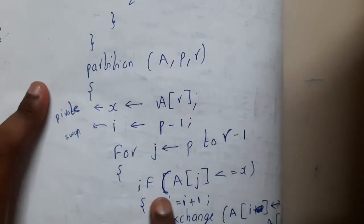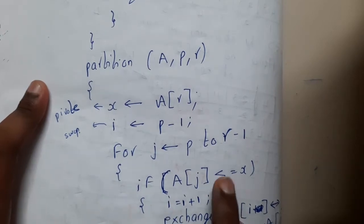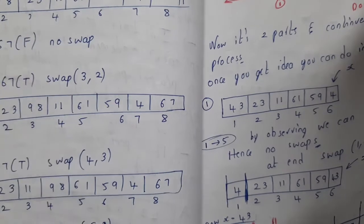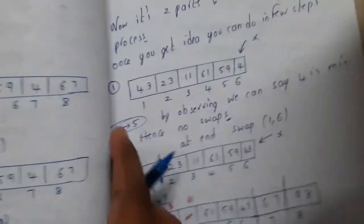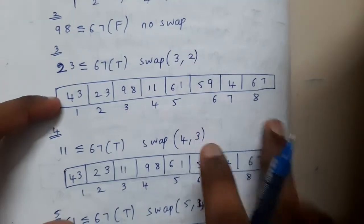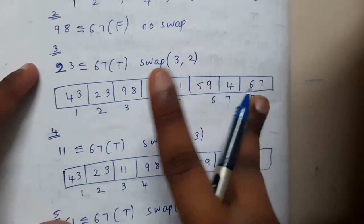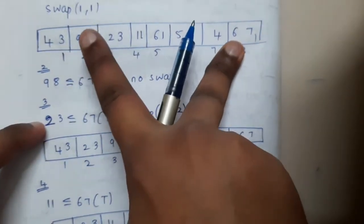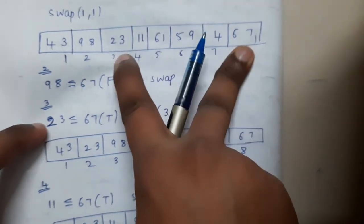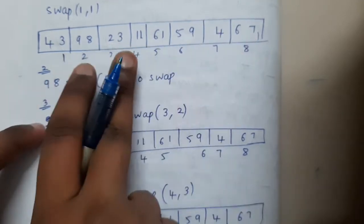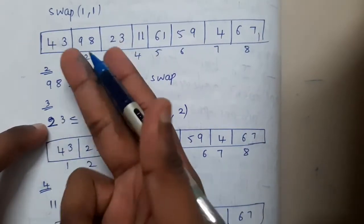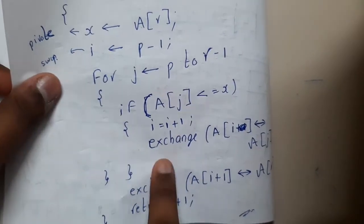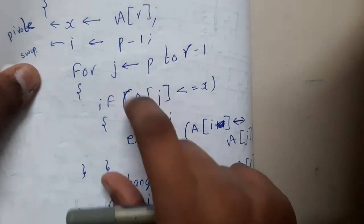After that you start your comparison. Based on the comparison, if you get less than or equal to, you'll be incrementing i by one and exchanging values. For example, when you compare 67 and 98 there is no issue, but when you compare 67 and 23, since 23 is less than 67, you swap the second element with the third element because the second element is greater than our requirement — we are indirectly swapping them based on this condition.